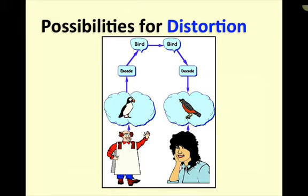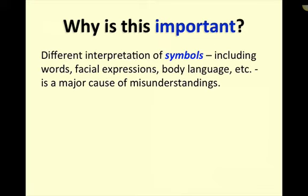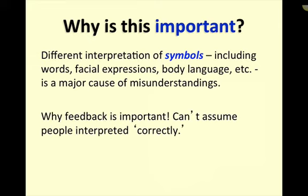When I need to communicate something, I first have to see what it is I want to communicate, and then I have to translate that into words — symbols — based on what I think the meaning of those words is, based on my past experience of how those labels are used. That information, or the symbols, kind of float through the air and come to a recipient who then has to decode those symbols based on what that person believes the symbols mean, which is based on their past experience. Look at all the possibilities for distortion. Different interpretation of symbols — and that includes words, facial expressions, body language — is a major cause of misunderstandings. That's why feedback is important. You can't assume that people interpreted your words correctly.